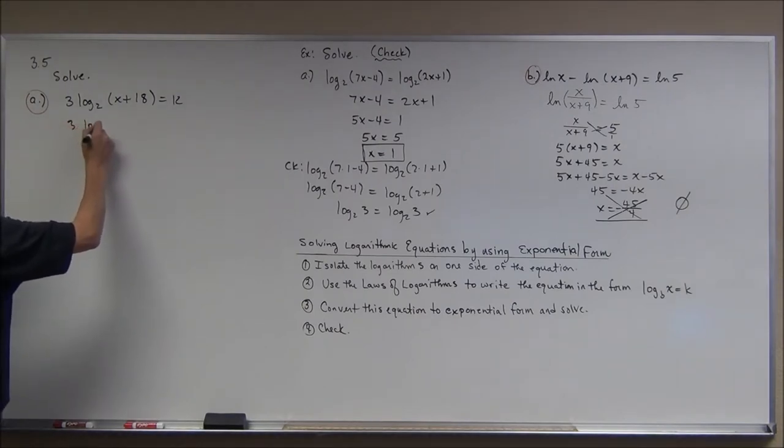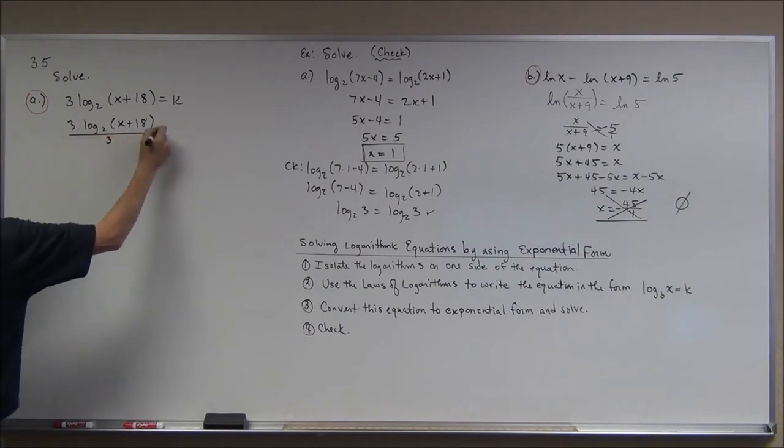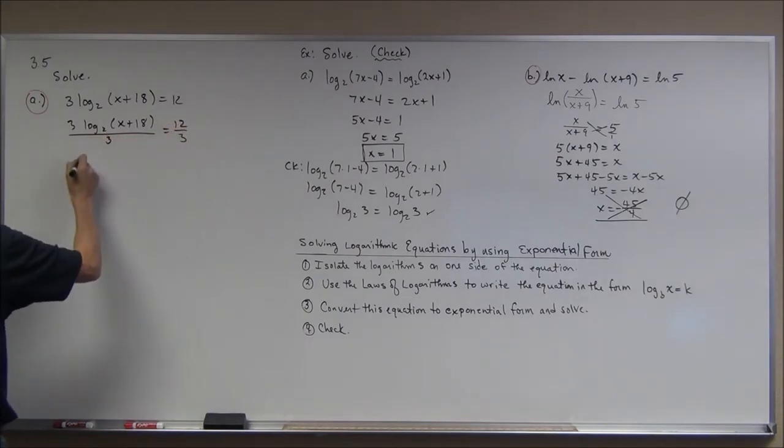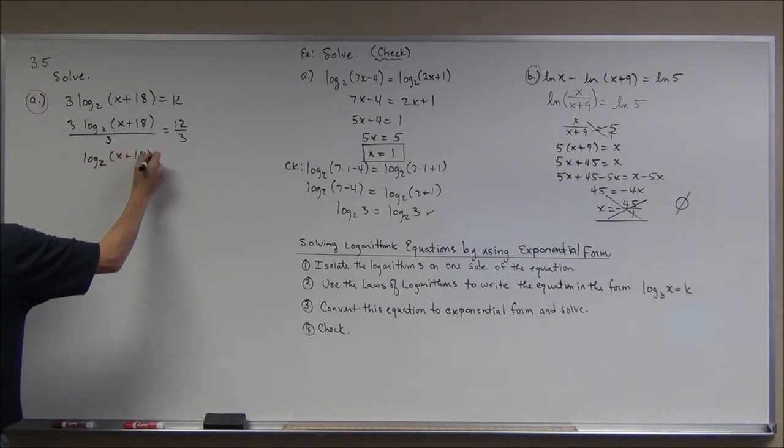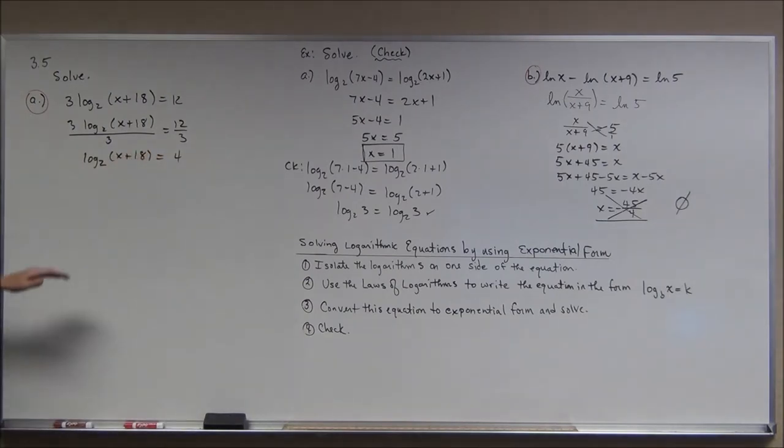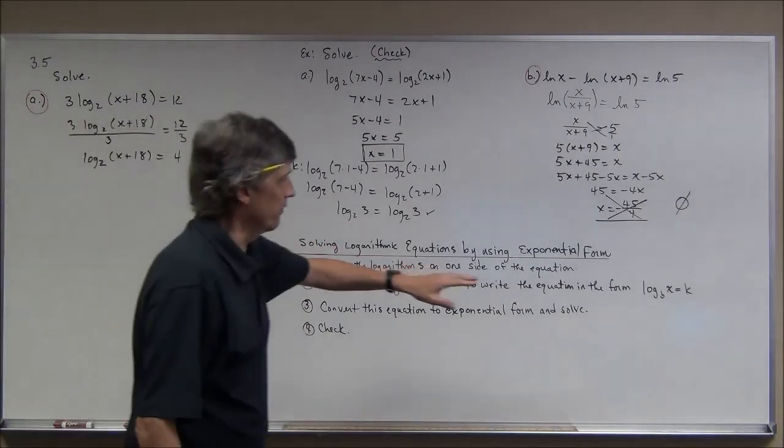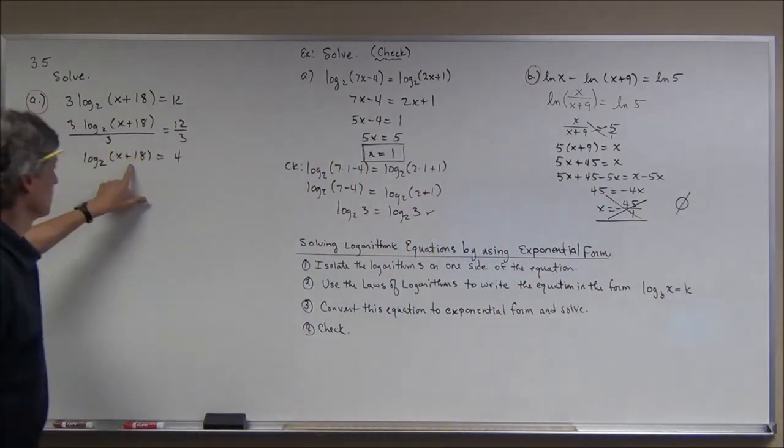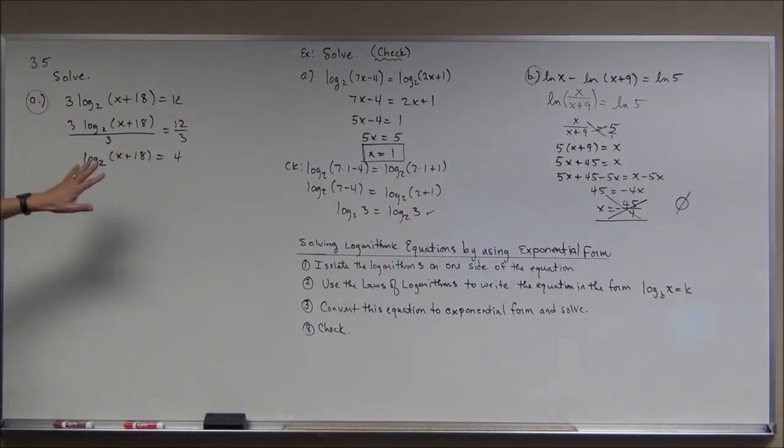So I'll divide both sides, of course, by three to keep it balanced. And I have log base two of x plus 18 is equal to four. So I have this kind of in this form. Now I notice that this expression is a little more complicated than just x, but I have a single logarithm set equal to a constant.